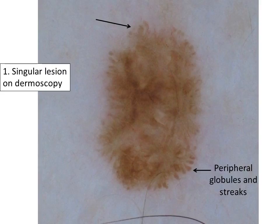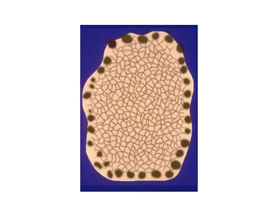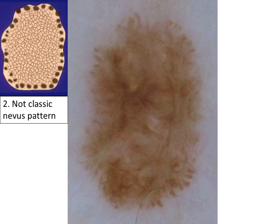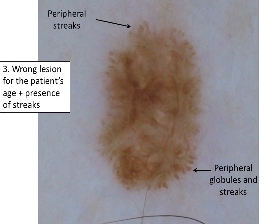It reminded me of a growing Clark nevus pattern showing central reticulation and peripheral globules. However, these nevi are usually seen in younger patients. The patient's lesion was not classic for the nevus pattern. It's also the wrong lesion for the patient's age — a 60-year-old — and it presents a melanoma-specific structure of streaks.